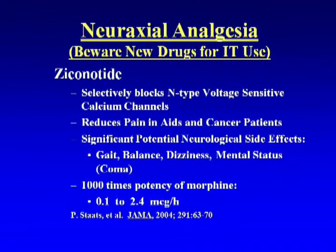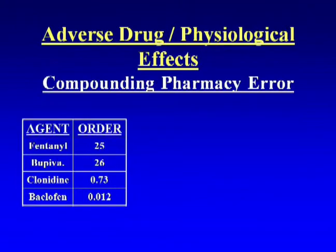Ziconotide is the newest agent approved for neuroaxial administration. It has potential for neurological side effects affecting gait and balance, can cause dizziness, and there are reports of coma associated with its administration. It is about a thousand times the potency of morphine. It's still relatively new, so just be aware of these known problems with drugs administered in the neuroaxial space.